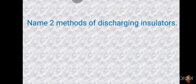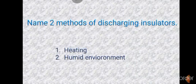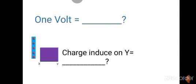Next, name two methods of discharging insulators. There are two methods: heating — we can discharge an insulator by heating — and by putting it in a humid environment. Next question: one volt is equal to joule per coulomb.